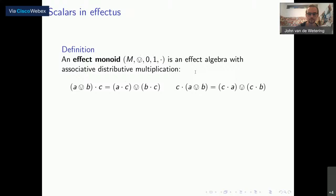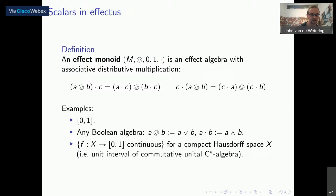This multiplication is not necessarily commutative — I'll come back to that a bit later. Examples: the real unit interval with regular multiplication is an example. Any Boolean algebra is an effect algebra, and now the multiplication we can simply define as the meet. A slightly different example: if we take a compact Hausdorff space X and look at the continuous functions to the real unit interval, this is also an effect monoid with pointwise operations. In fact, this is the unit interval of a commutative unital C*-algebra. The set of effects of any unital C*-algebra is an effect algebra, but if you also want the monoid structure, it needs to be commutative. For the categorically inclined: effect monoids are in fact the monoids in the category of effect algebras.